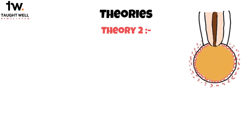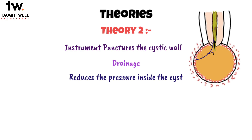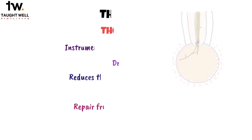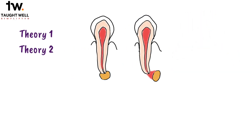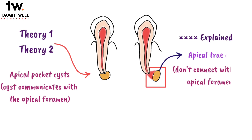A second theory suggests that the instrument punctures the cyst's wall, allowing drainage, which in turn reduces the pressure inside the cyst, promoting fibroblasia and repair from the lesion's periphery. These two theories may explain the healing of apical pocket cysts, where the cyst communicates with the apical foramen. However, they do not explain the healing of cysts that do not connect with the apical foramen, known as apical true cysts.